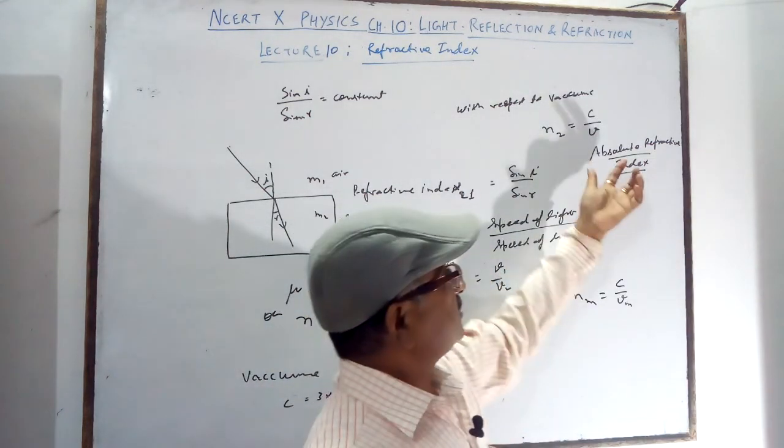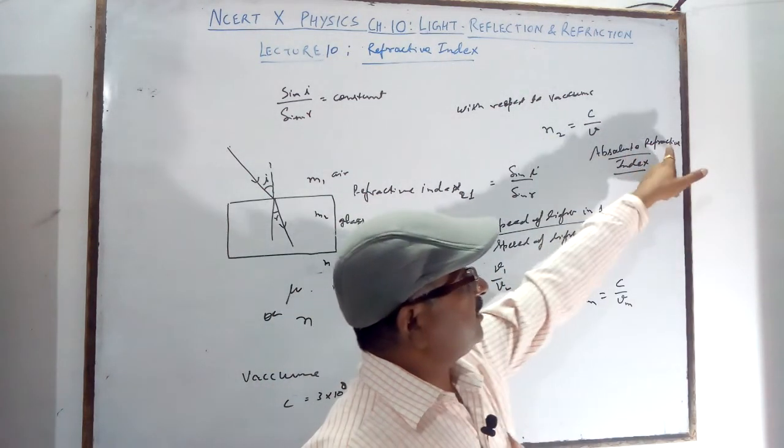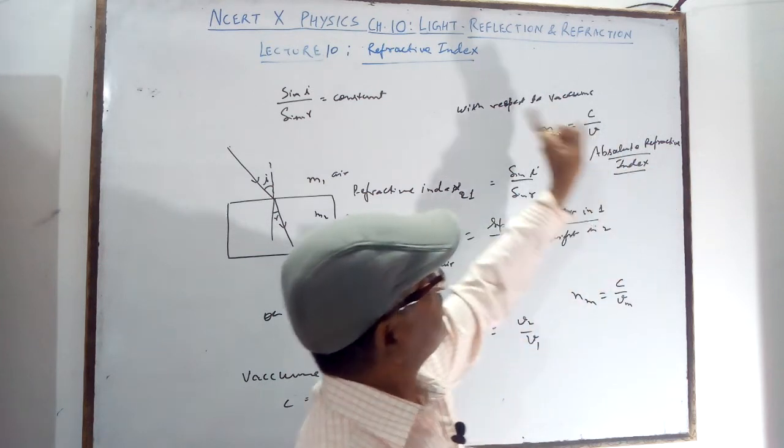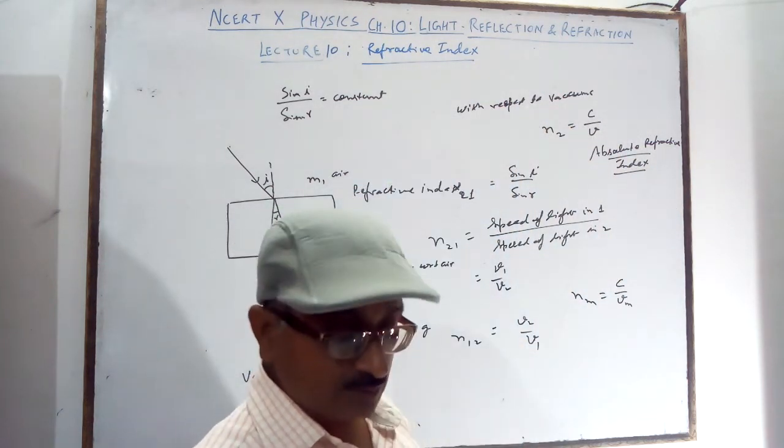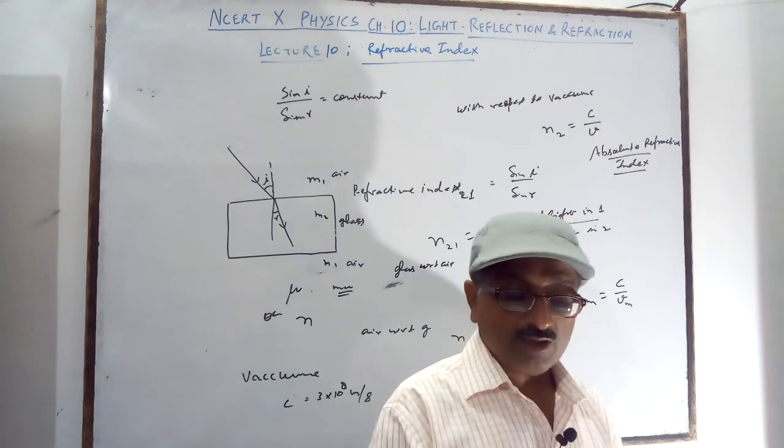Absolute refractive index is simply called the refractive index. If the refractive index is given, it means you must understand. Absolute is not needed. Only refractive index is given, it means it is absolute, it is calculated with the help of C.